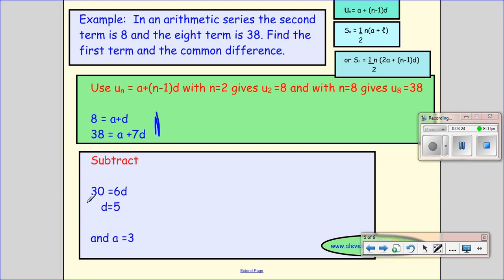So 38 take away 8 gives me 30. A take away A, they disappear. 7D take away D gives me 6D. Divide by 6 gives you D equals 5. And then that's quite nice, and you can just substitute it in there and see very quickly and easily that A equals 3.